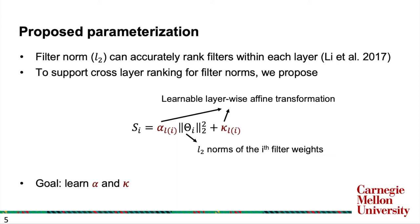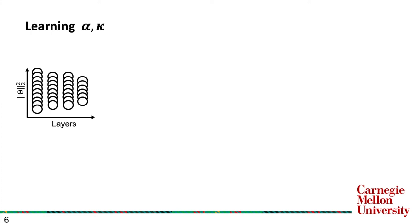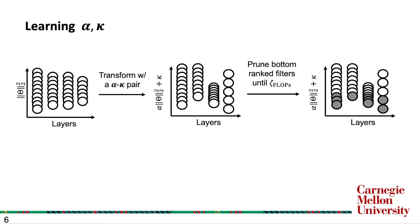To learn alpha and kappa, we first need to understand how they are used in filter pruning. Assuming here we have a four-layered network with each circle representing a filter. Given an alpha-kappa pair, we can transform the filter norm into a global importance metric. We can then prune the bottom-ranked filters until some flop constraint is met.